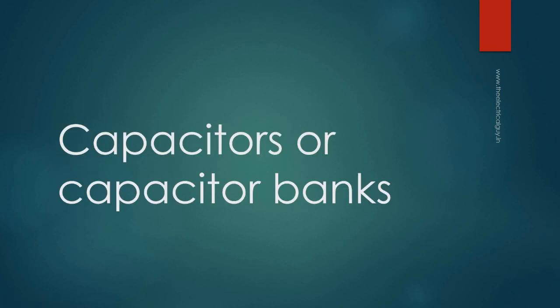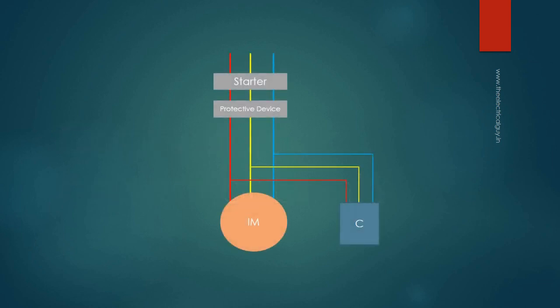Capacitors or capacitor banks are the most commonly used method for power factor correction — you will find them almost everywhere. Most of the time the load is inductive, which draws lagging current and decreases the power factor. For power factor improvement, capacitors are installed in parallel with such loads, providing leading current which neutralizes the lagging component, thus improving the power factor.